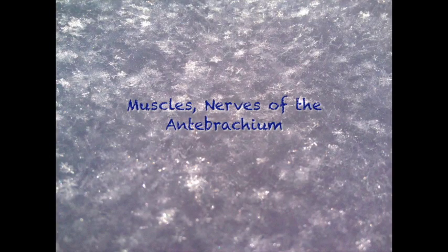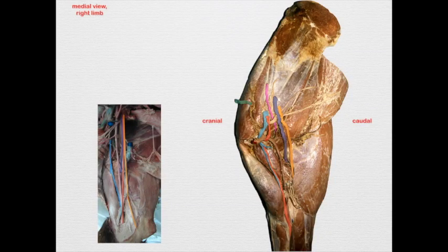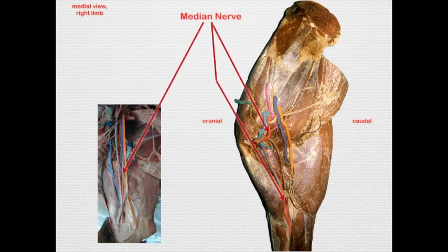Welcome to the little lecturette on muscles and nerves of the antebrachium. Looking at a similar image as we've seen before, we're going to start out by tracing the median nerve. Remember how it comes around the medial side of the axillary artery and joins by way of a little loop to the musculocutaneous.